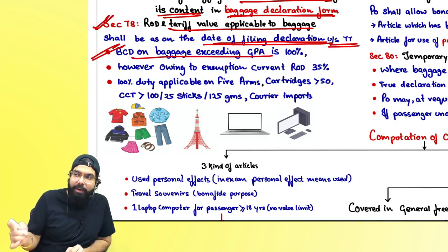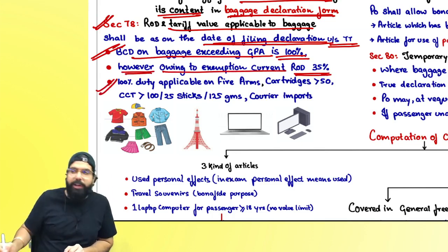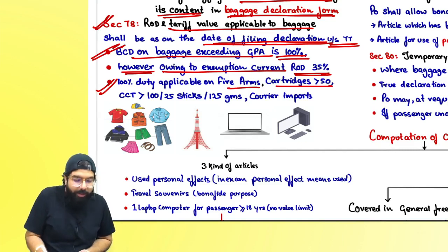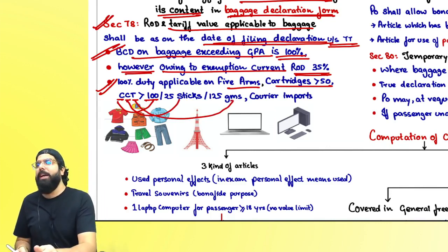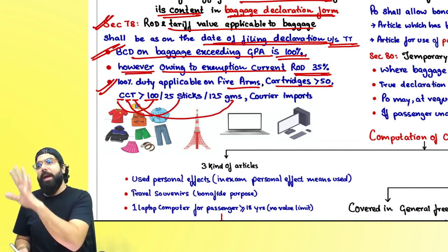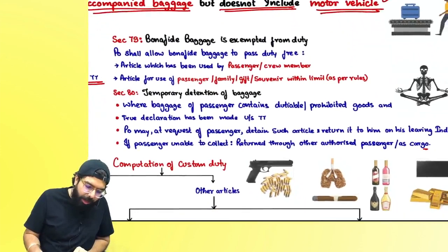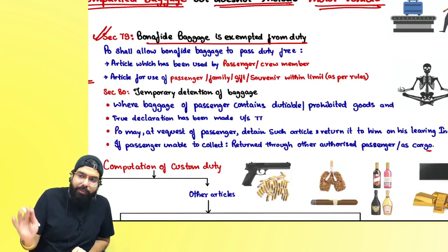Basic custom duty on baggage exceeding the general free allowance is 100%, however owing to an exemption the current rate of duty is 35%. But 35% is not applicable — 100% duty is applicable — if you have got firearms, or cartridges greater than 50, or cigarettes greater than 100, cigars greater than 25, or tobacco greater than 125 grams. Those are annexed items and 100% duty shall be applicable. Courier imports also attract 100% duty.